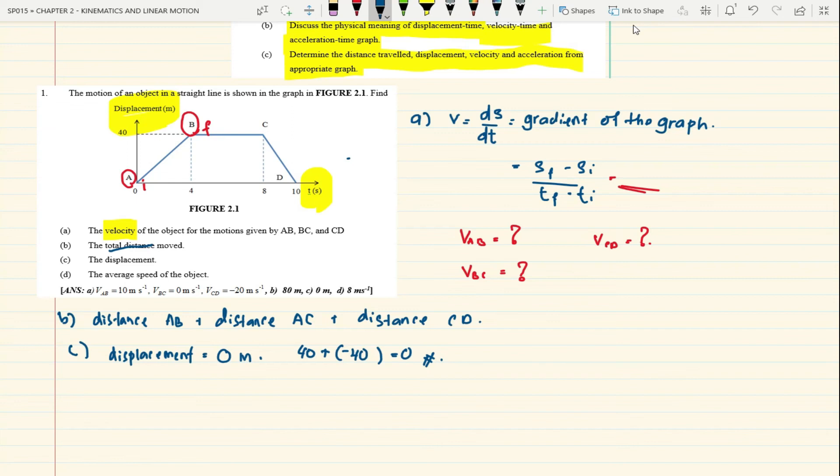Question D: the average speed of the object. Average speed means V equals distance over time. If it says speed, it means distance over time. But if it says velocity, it's displacement over time. Just substitute and solve.